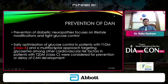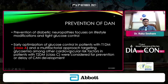Prevention of diabetic neuropathy is focused on lifestyle modification and tight glucose control. Early optimization of glucose control in patients with type 1 diabetes is a Class 1A indication. A multifactorial, multidisciplinary approach should be taken.